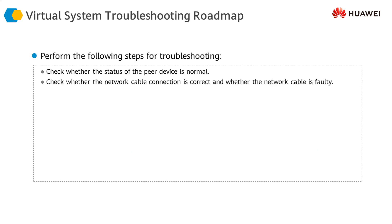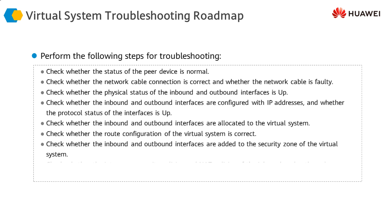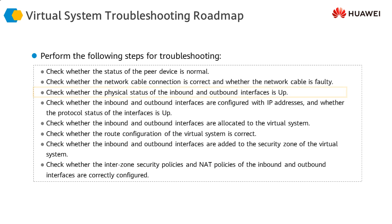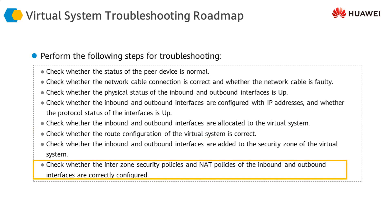The different things you need to check are pretty much standard for any device, whether it's a physical firewall or a logical firewall. For example: check whether the physical status of the inbound and outbound interfaces is up, check whether the interfaces are allocated to the appropriate virtual system, and whether the routing information is in place.